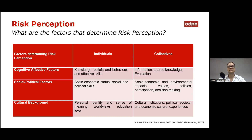What are the factors that determine risk perception? As you can see in the table below, we can divide these between individuals and collectives. When it comes to cognitive affective factors at the individual level, this could include knowledge, beliefs, behavior, and affective skills. However, for collectives, this is limited to information, shared knowledge, and evaluation.